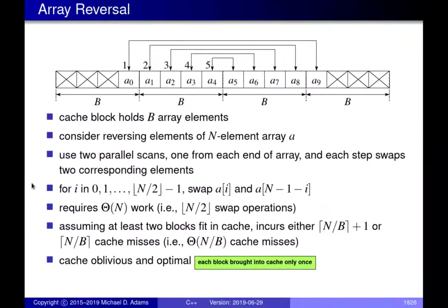The next algorithm I'd like to consider is array reversal. We have a one-dimensional array with n elements, and we want to reverse the order in place so no additional storage is required. In this example n equals 10, with elements numbered 0 to 9, and b equals 4 — the number of elements a cache block can hold. The array reversal algorithm performs two parallel scans: one starting at a0 scanning forward, and another starting at a9 scanning backward, swapping corresponding elements.